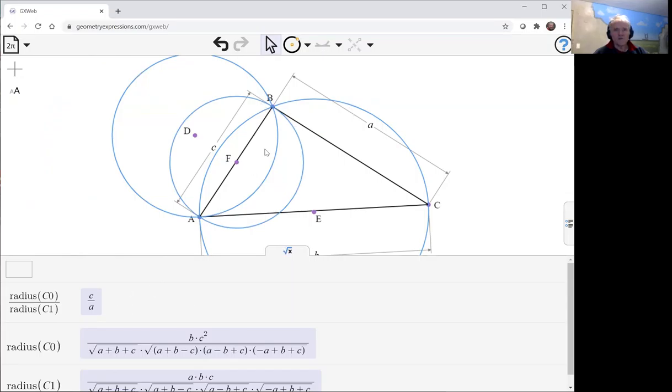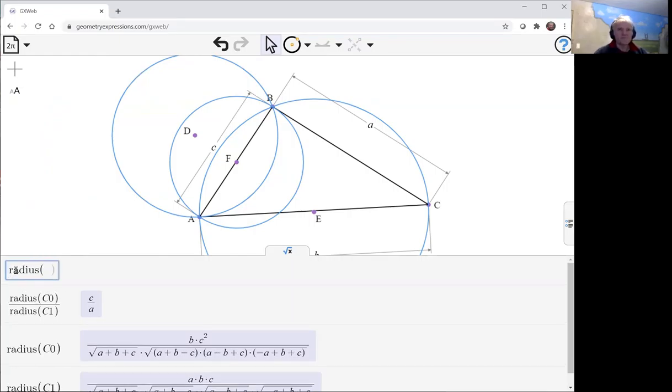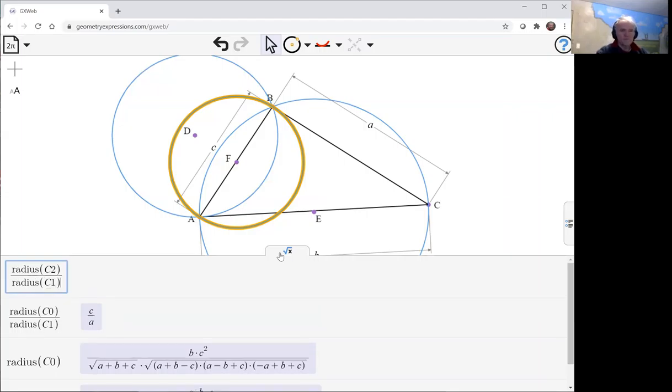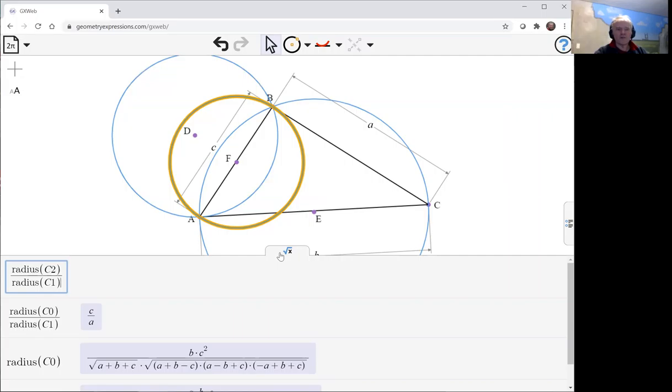Now, what would the radius of that one be? So, tell me, think what that one should be. And the software gives it, is that the answer that you thought of?